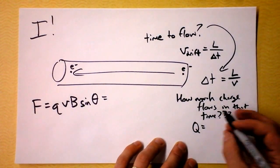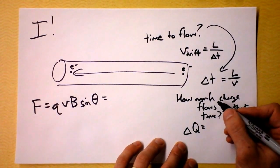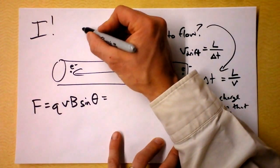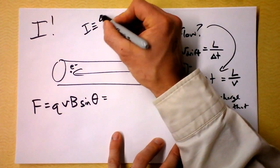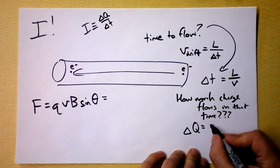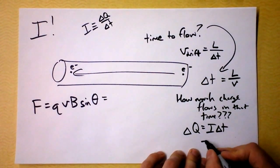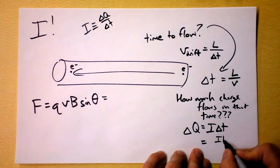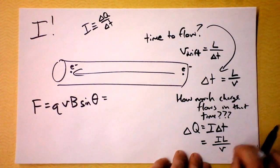It depends on the current. You remember that current is charge over time. So, let me put that up here, current is charge over time. So I'm solving for q, that's going to be i times delta t, which is simply i times l over the speed of the electrons. Look, I just plugged that in right there.